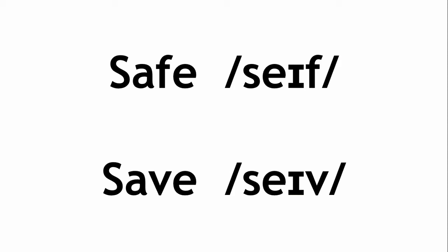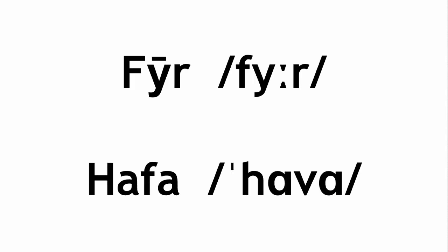Therefore, these two sounds, f and v, count as different phonemes in English. This isn't the case in all languages. In Old English, for example, f and v counted only as one phoneme.